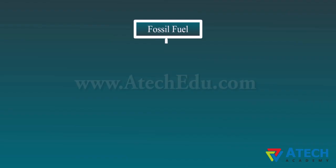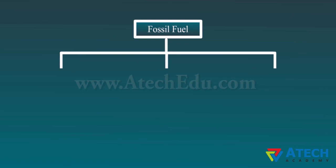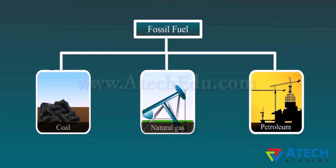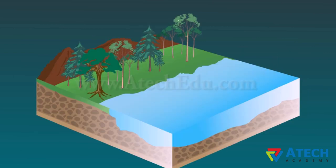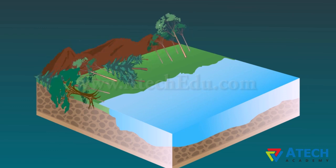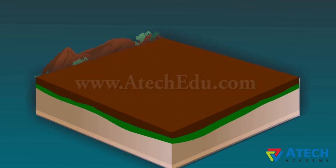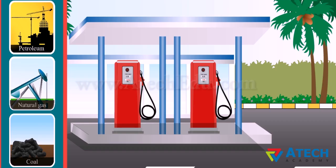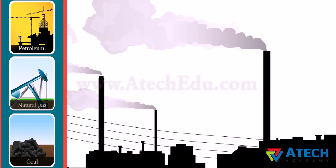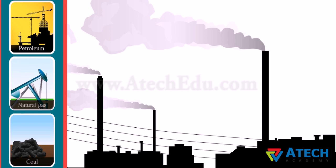Coal, petroleum, and natural gas are called fossil fuels because they are formed from dead remains of living organisms. These are exhaustible resources. It takes millions of years for dead organisms to get converted into fossil fuels. Fossil fuels cannot be prepared in a laboratory because their formation is a slow process and conditions for their formation cannot be created in a laboratory. The reserve of fossil fuels will last only a few hundred years because their reserves are being used continuously without thinking to conserve them.